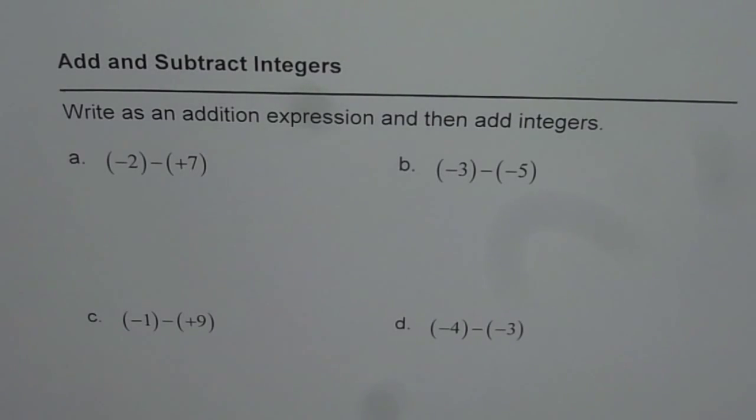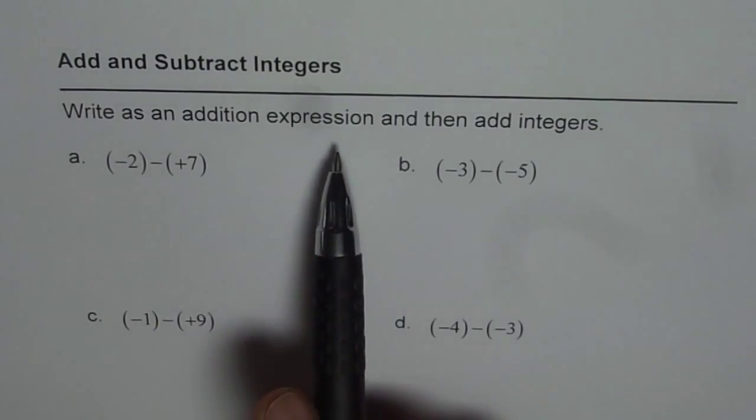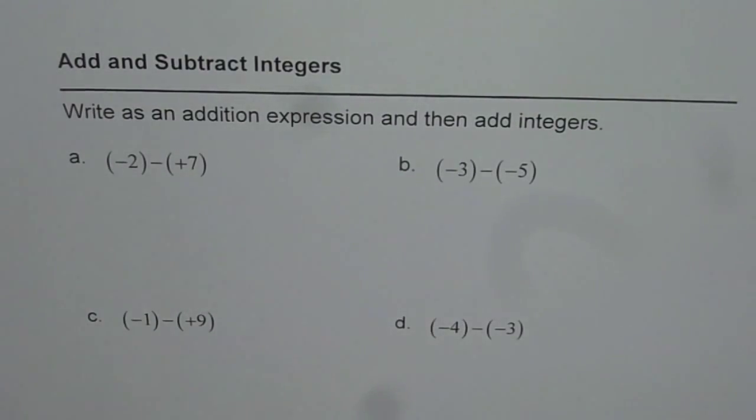Here is another question to understand how to add and subtract integers. And here we have slight variation. The variation is that the first term is negative in all four. Otherwise it is similar to the previous question. Let's read the question. Write as an addition expression and then add integers. So we have four expressions here.